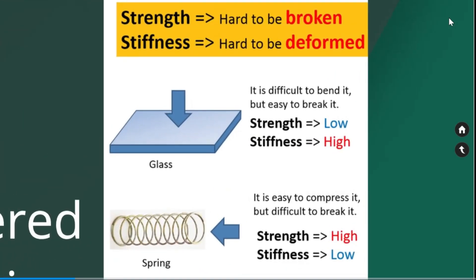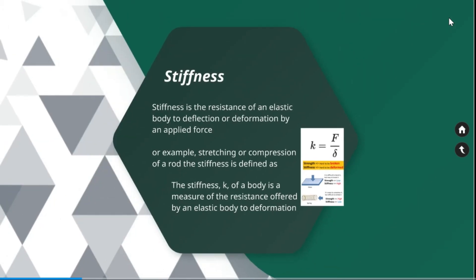If the material is having higher strength, it is hard to broken. If the material is having higher stiffness, it is hard to be deformed. Glass having lower strength and higher stiffness, while spring having higher strength and lower stiffness.